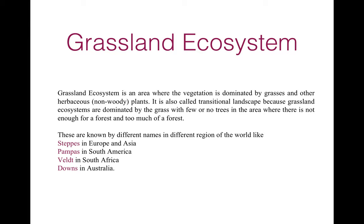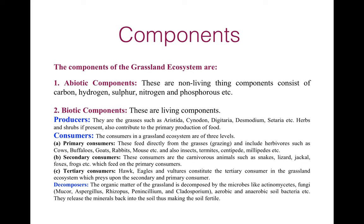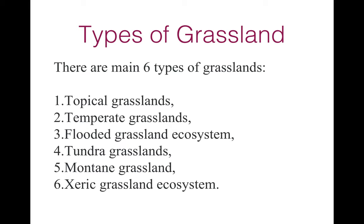To summarize: grasslands are known by different names in different regions of the world. They share common characteristics, though these vary from one grassland to another. The components include abiotic components and biotic components. Biotic components are of three types — producers, consumers, and decomposers — and consumers are further divided into primary, secondary, and tertiary. There are six types of grassland ecosystems.